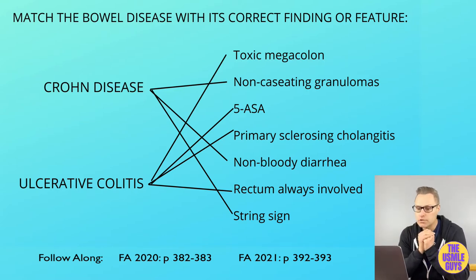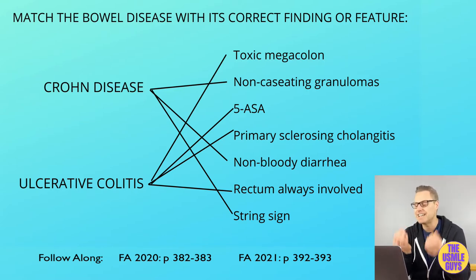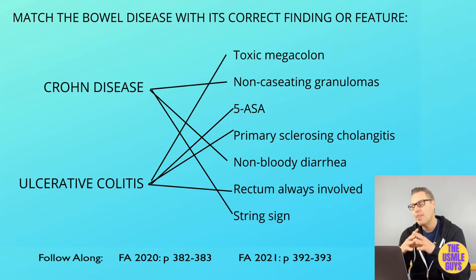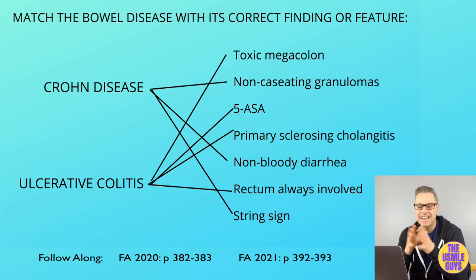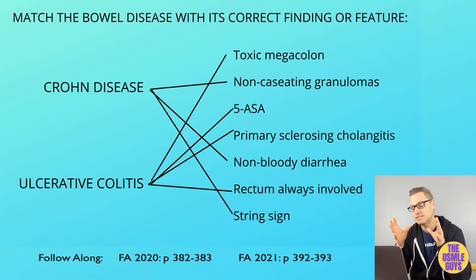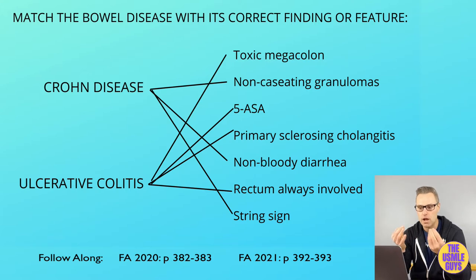Ulcerative colitis is limited to the colon and occurs in a continuous manner, while Crohn's disease can affect any portion of the GI tract — basically from the mouth all the way to the anus — and typically happens in a non-continuous manner. Importantly, ulcerative colitis always involves the rectum, whereas Crohn's typically skips the rectum.